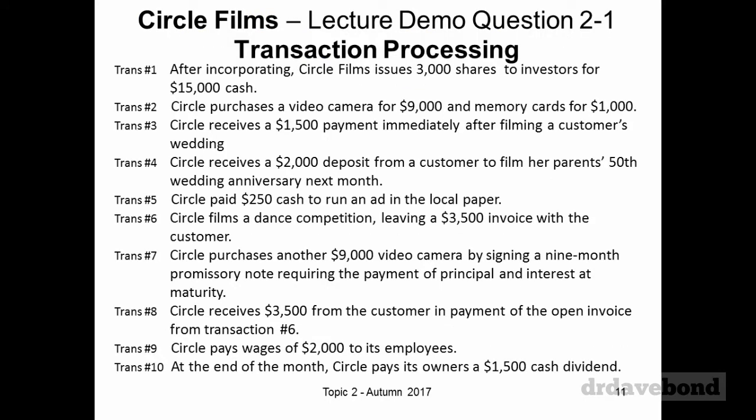We have 10 transactions from the start of a business — Circle Films — going from investors putting money in, all the way down to dividends being paid. We're going to step through how this works using a setup that takes the basic accounting equation — assets equals liabilities plus equity — and adds specific asset accounts, liability accounts, and equity accounts. The information is in your slides and also in a handout document available online.